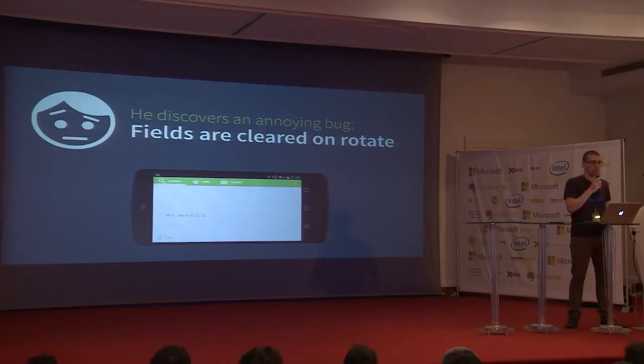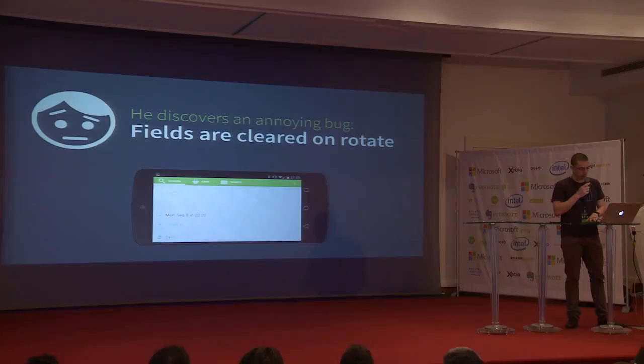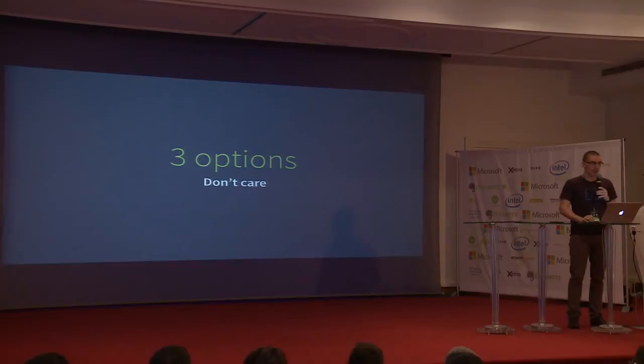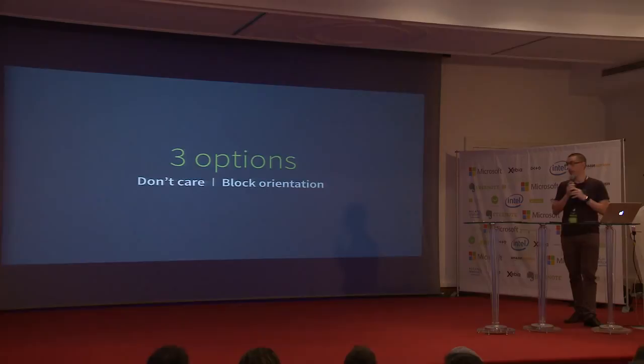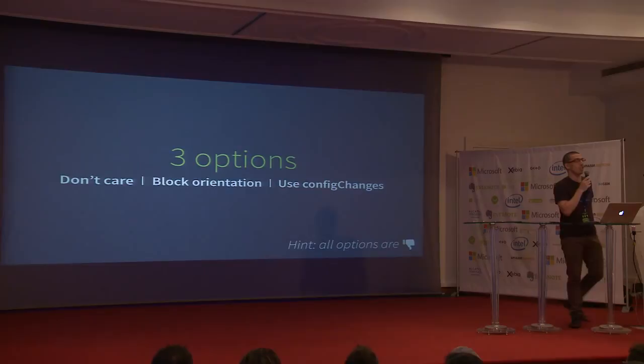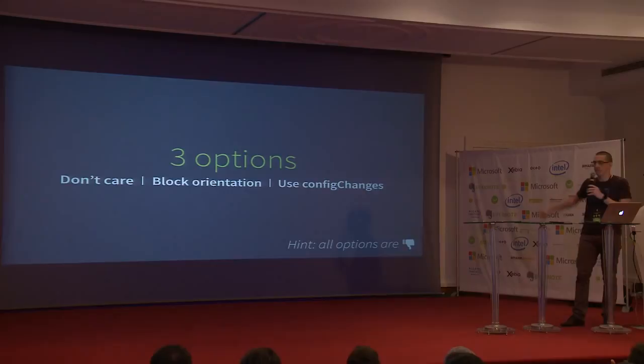Kevin is quite confused about that. He started thinking about how to solve the problem, and came up with three options. The first one: don't care about it — easy, but not a good option. The second: block the orientation, so Android stops restarting the application on rotation — also not a great option. The third: use the configChanges flag in the Android manifest. All options are bad — really bad.